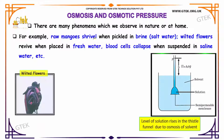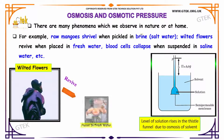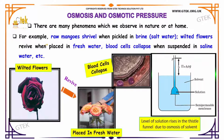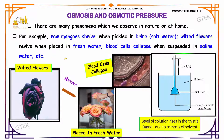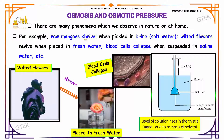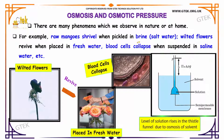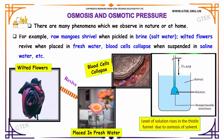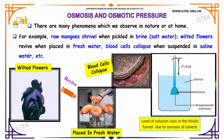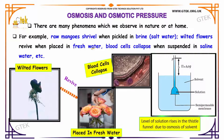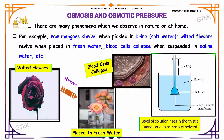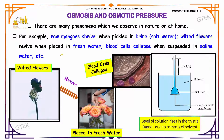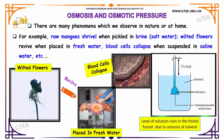There are many phenomena which we observe in nature or at home. For example, raw mangoes shrivel when pickled in brine (salt water), wilted flowers revive when placed in fresh water, and blood cells collapse when suspended in saline water.